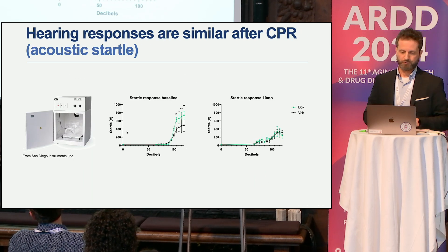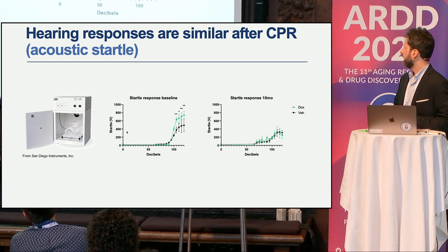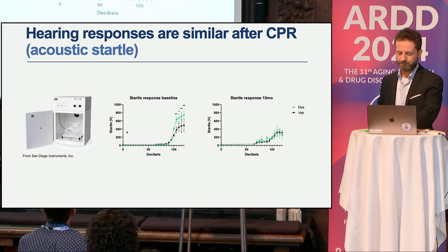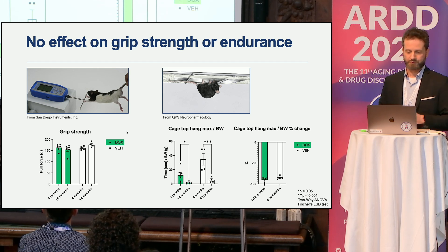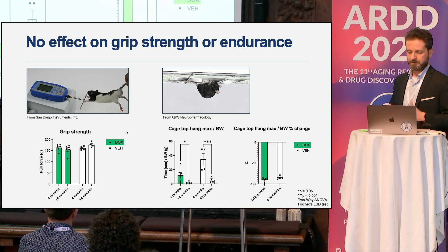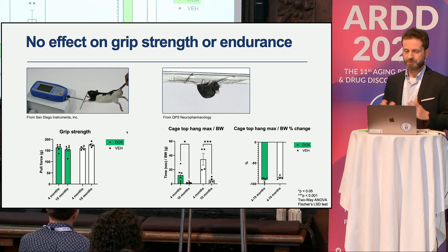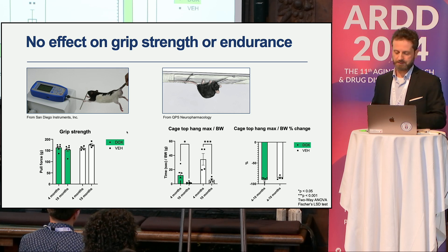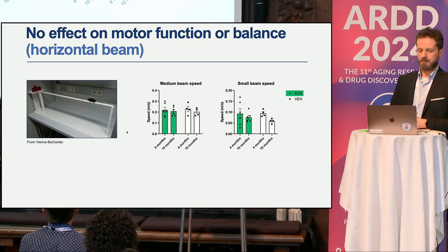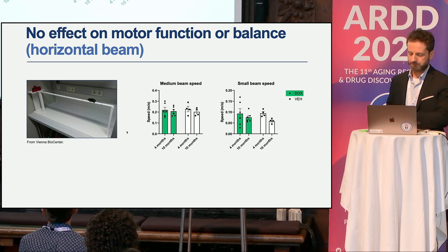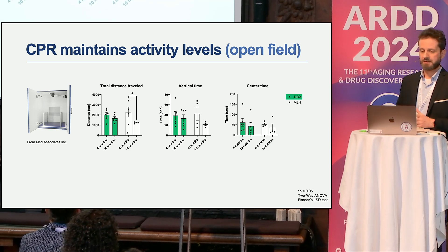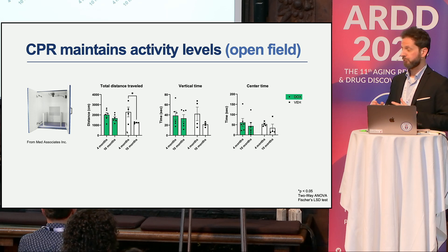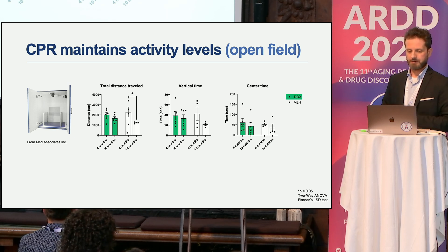For hearing, tested with acoustic startle, there were no differences after six months—both groups are equally impaired. Grip strength showed no statistically significant differences, and cage-top hang times showed a dramatic decrease from four months to ten months, but this decrease was present in both groups equally, so no beneficial effect here. Motor function and balance on the horizontal beam also showed no difference between groups.